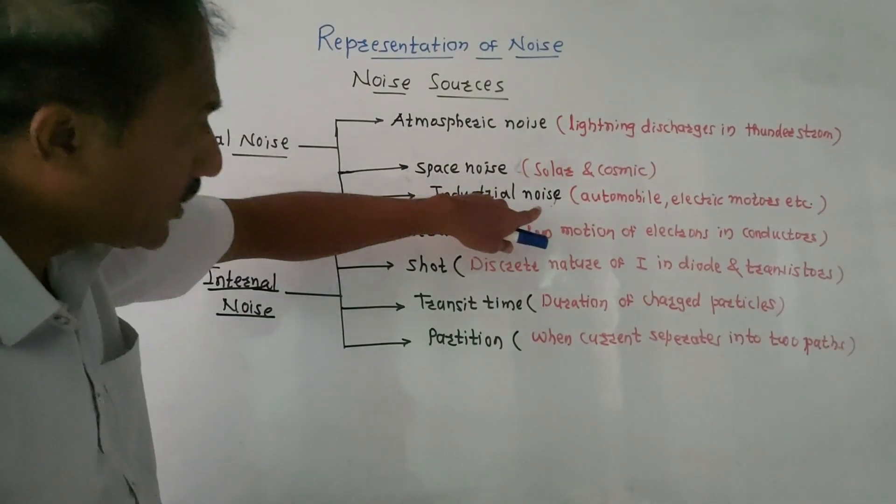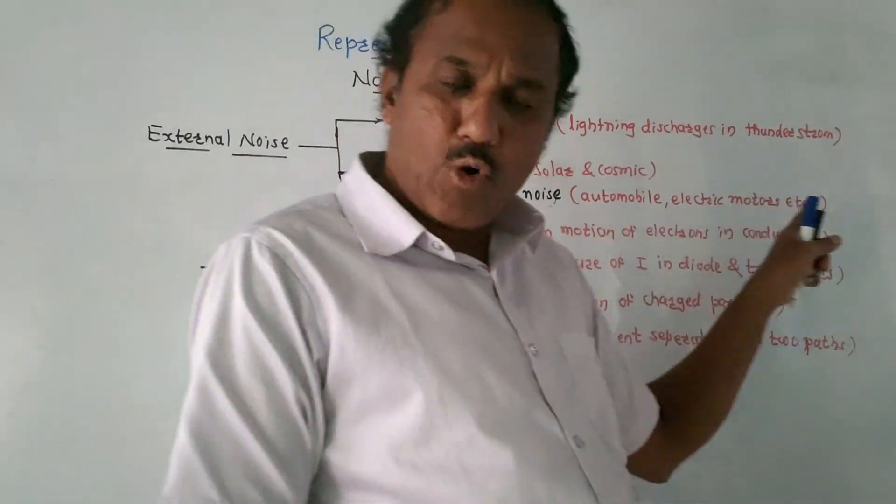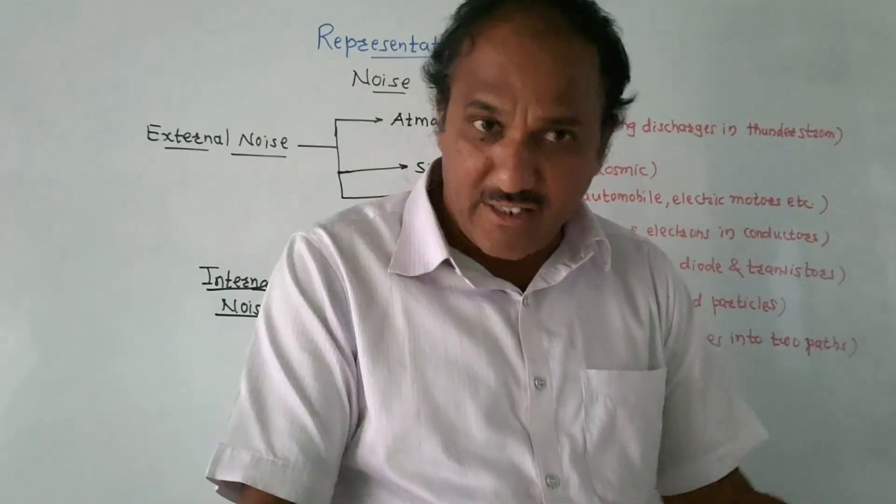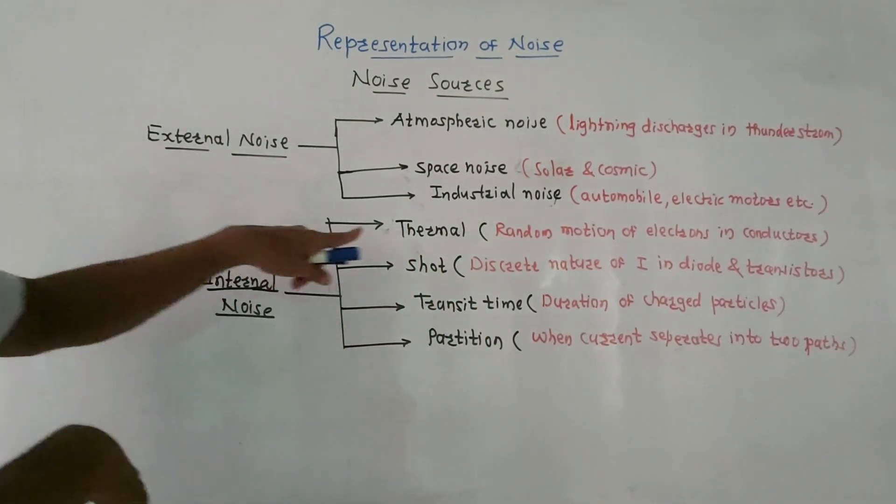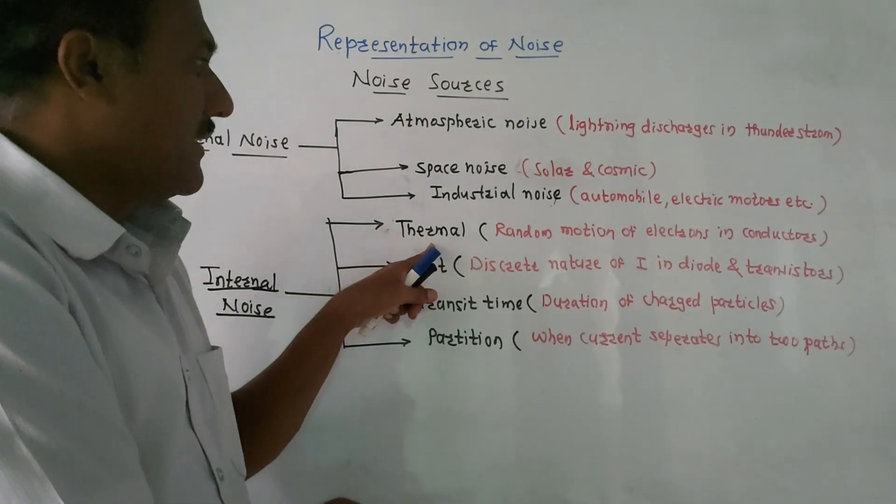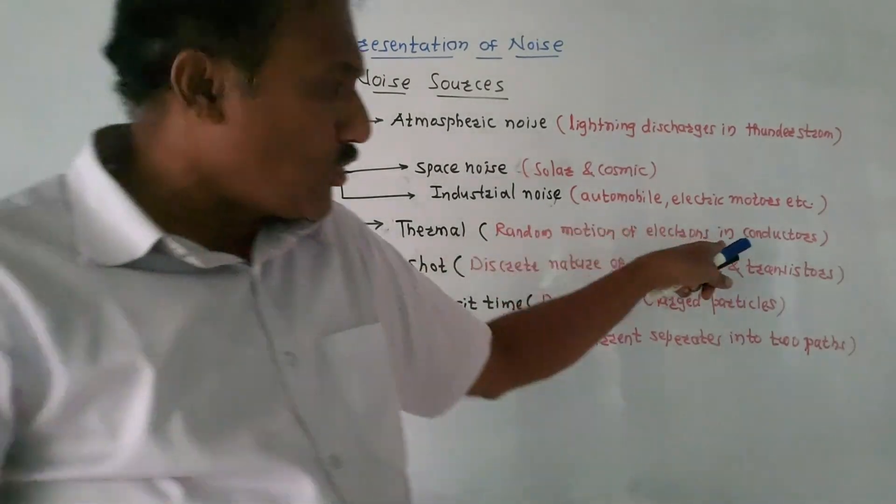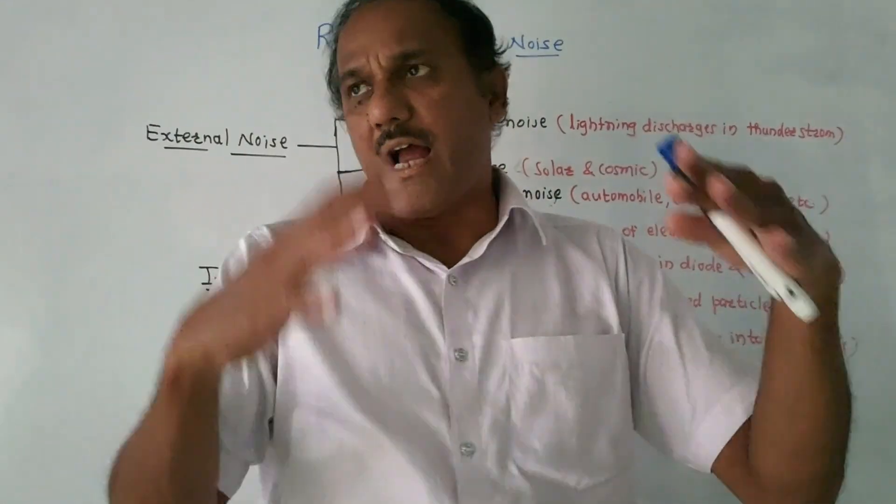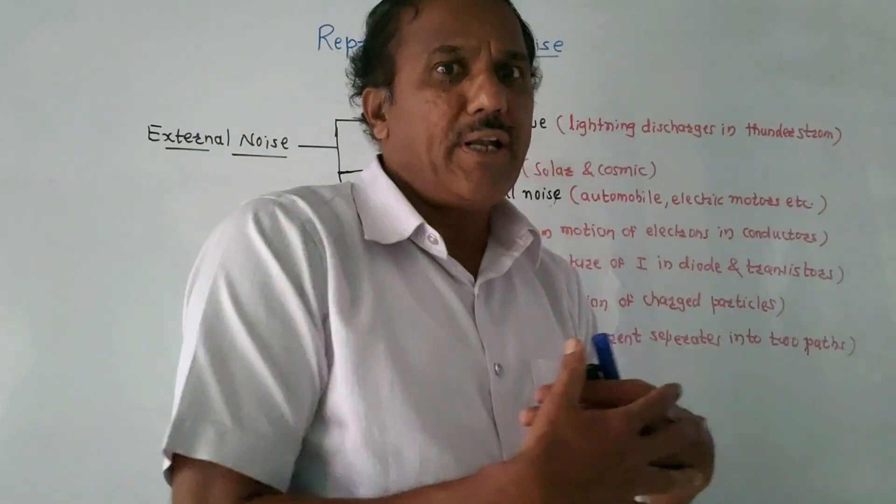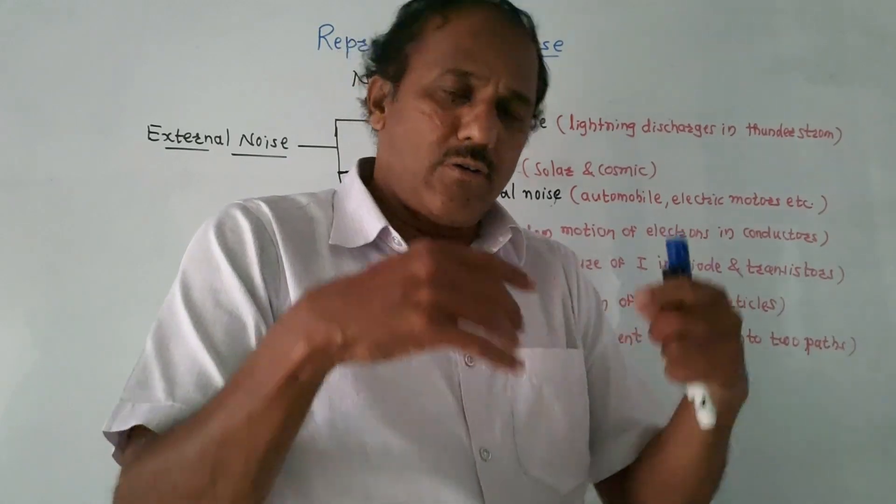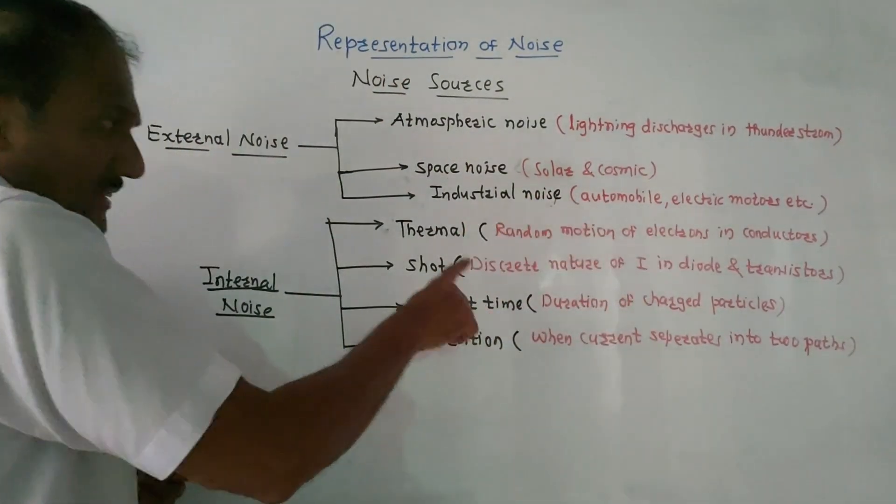Third type of noise is industrial noise. As the name indicates, it is related to automobile, then electric motors, then ignition of aircraft, and so on. Then next is internal noise. First type of internal noise is thermal noise. This thermal noise is related to random motion of electrons in the conductor. Ideally, we say there is smooth motion or continuous motion of electrons in the conductor, but it is not like that. The electron motion in the conductor is random in nature, so it produces a noise which is thermal noise.